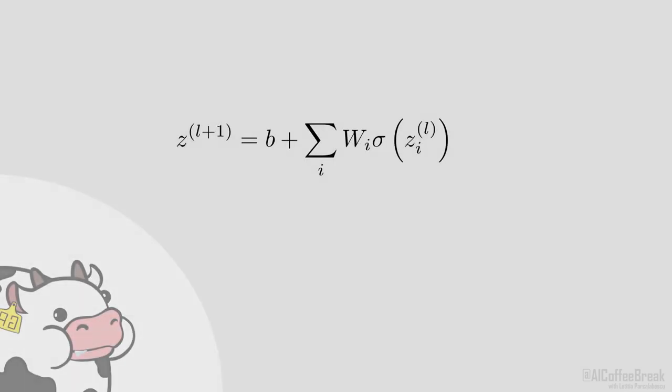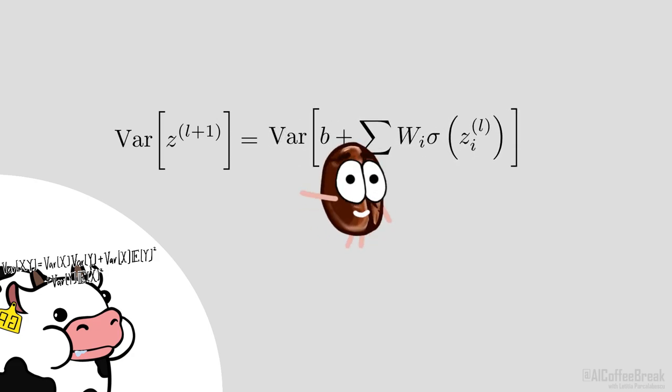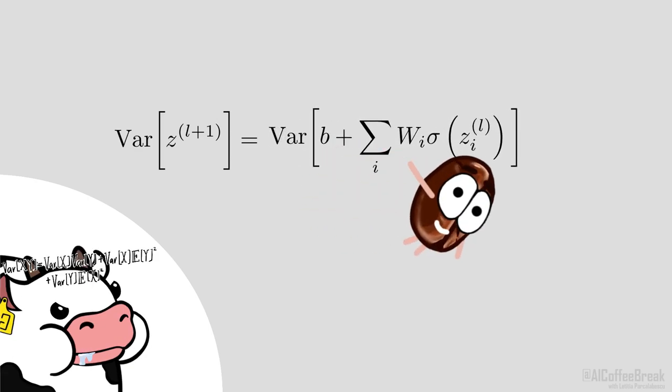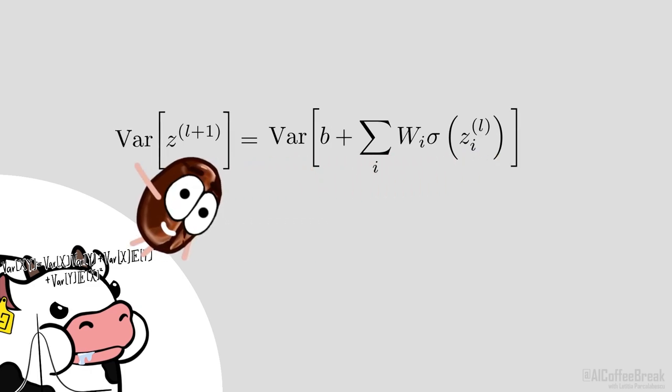Let's illustrate this by deriving the recursion relation for the variance at infinite width, resulting from a single data point. Don't worry, this will only take a few steps to derive, but we'll show you the basic idea. Ok, so how do we turn the layer equation into an equation of variance? Well, we can simply compute the variance of both sides. Recall that b is the bias term, w_i are the weights and sigma is the activation function. On the left-hand side, we have, by definition, the variance of layer L plus 1.